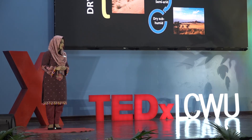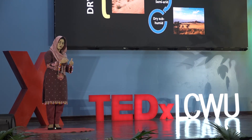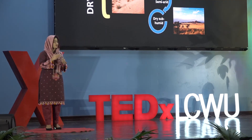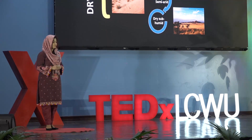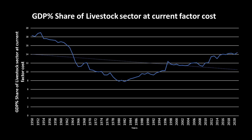The dry lands of Pakistan are home to about two-thirds of its population. Most of the people living in these dry lands are engaged in livestock farming and irrigation-based cultivation. The agriculture sector forms the backbone of Pakistan's economy, contributing 22% to the nation's GDP and employing 42% of the total labor force. Similarly, the livestock sector also forms the foundation of our country's economy.